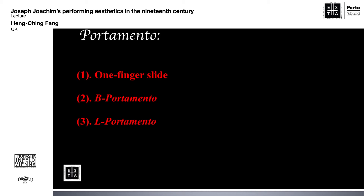The last element I would like to talk about is tempo flexibility and rhythmic adjustments. There is sufficient literature and recorded evidence to address the issue of tempo fluctuation and rhythmic flexibility in the classical and Romantic period. In my lecture, I divided my analysis into four different types. I will explain and examine those points with examples from recorded and written evidence.